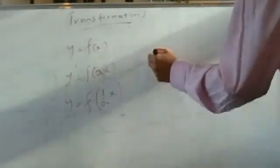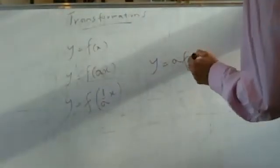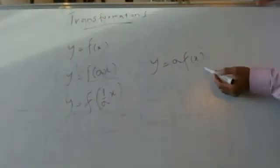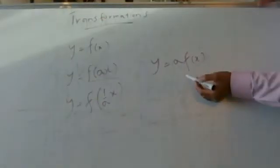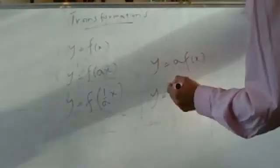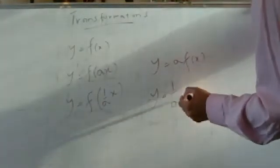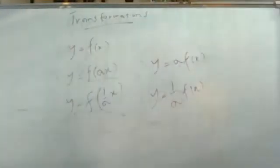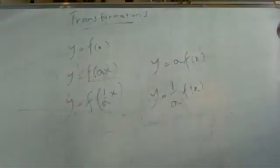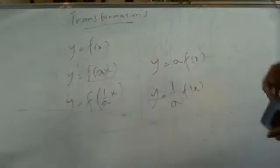For the y-axis: y equals a·f(x) means you multiply all the y-values by a units. And if it was (1/a)·f(x), that means you divide all the y-values by a units. Let's try an example to make sense of this.